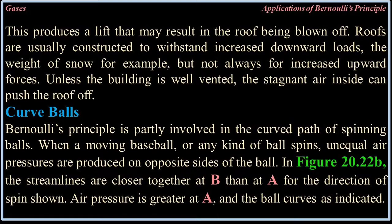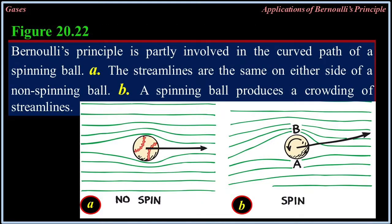In figure 20.22B, the streamlines are closer together at B than at A for the direction of spin shown — air pressure is greater at A and the ball curves as indicated. Figure 20.22: Bernoulli's principle is partly involved in the curved path of spinning balls. A) The streamlines are the same on either side of the non-spinning ball. B) A spinning ball produces a crowding of streamlines.